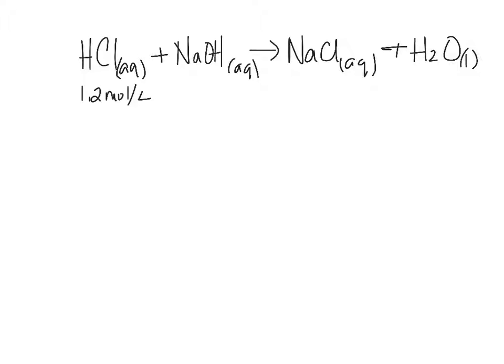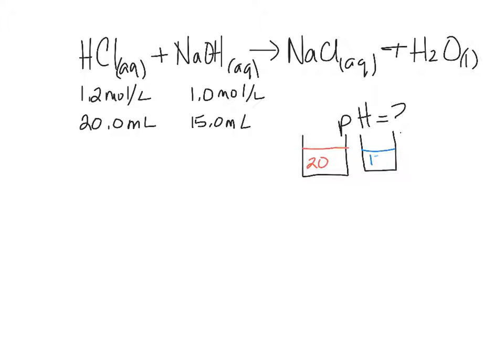So 1.2 molar acid, you've got 20 milliliters. You have 15 milliliters of base, and it's a 1.0 molar solution. So it wants to know the pH of what's left after you mix these two things together. Basically, we have a beaker where we've got 20 mL of this acid. We have a beaker where we've got 15 mL of this base. If we add them together, what's our final volume?